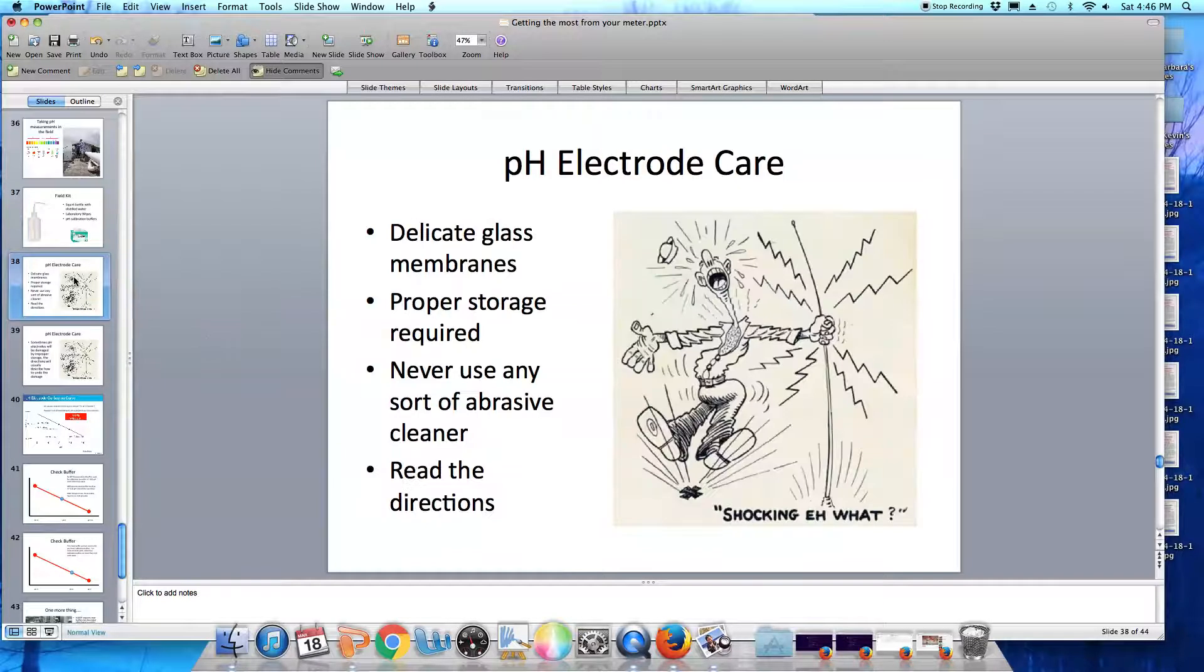Let's begin by talking about how to take care of our pH electrode. Your pH electrode has a delicate glass membrane that will allow hydrogen ions to migrate from your water sample inside the electrode and generate a millivolt signal. Proper storage of this electrode is required to protect that delicate glass membrane.